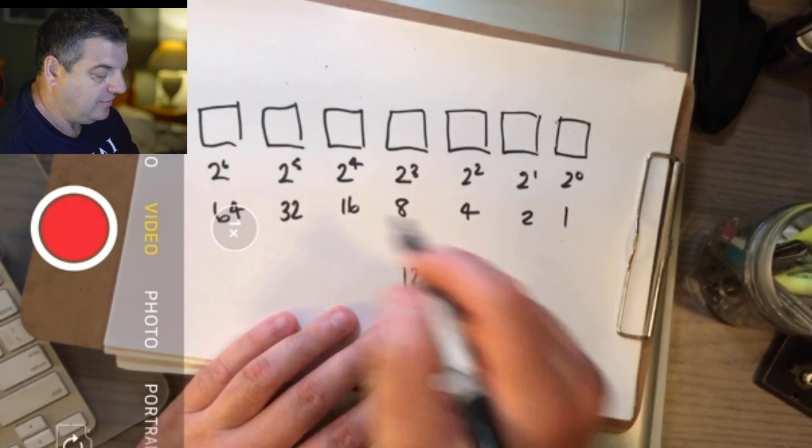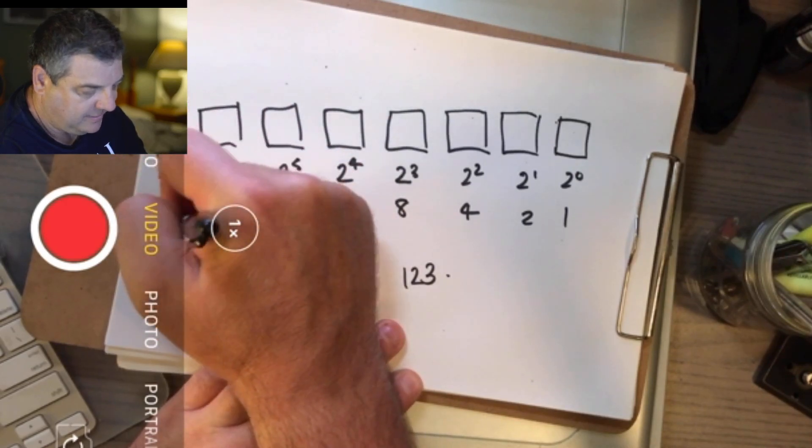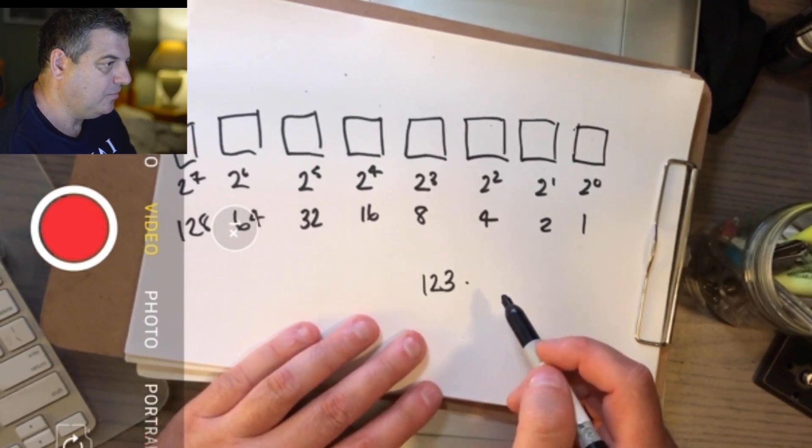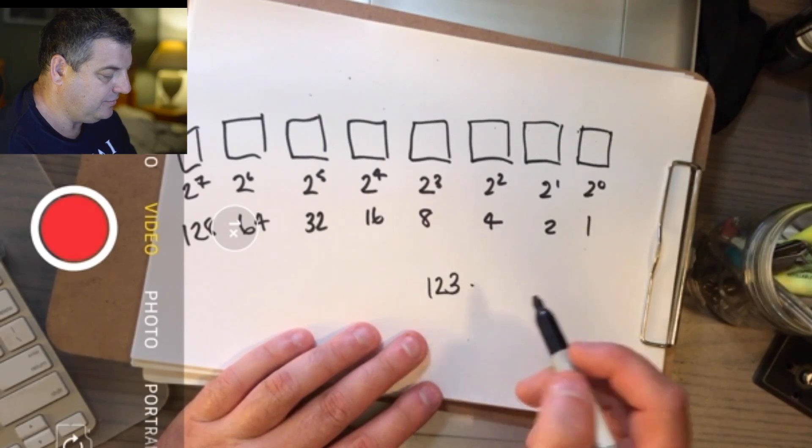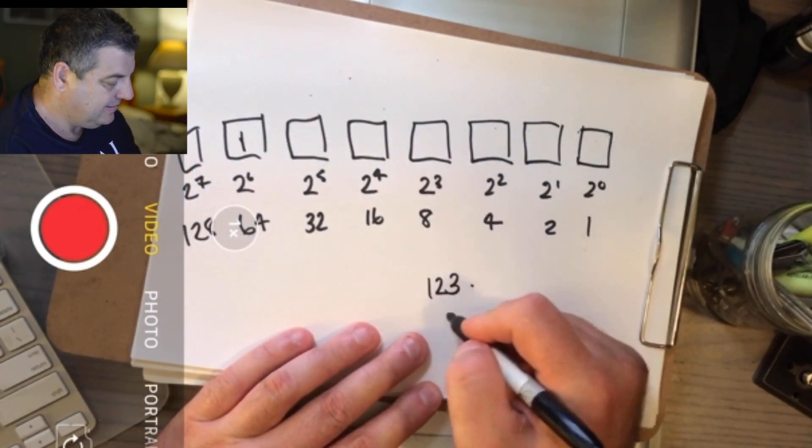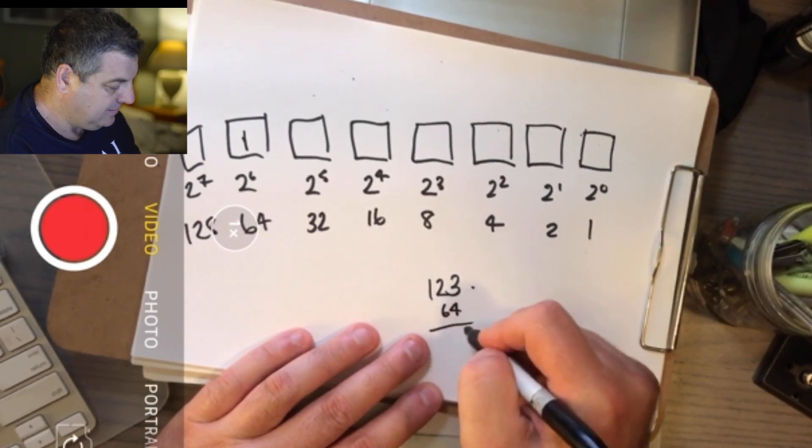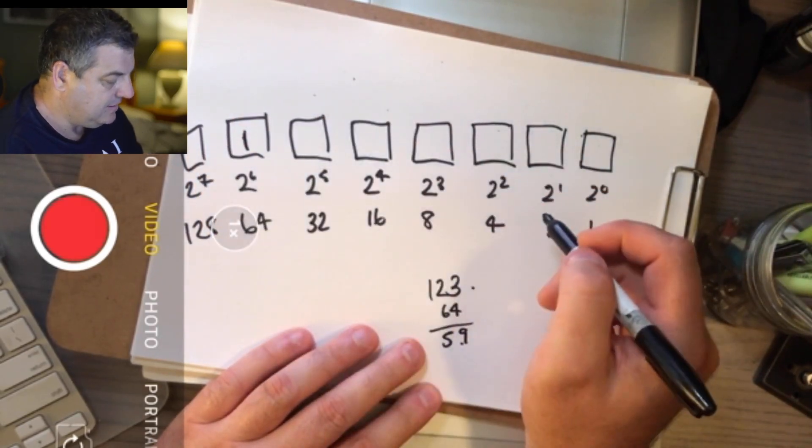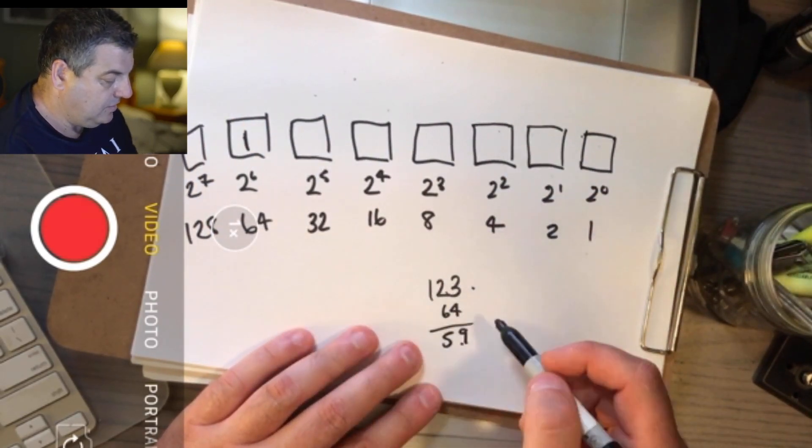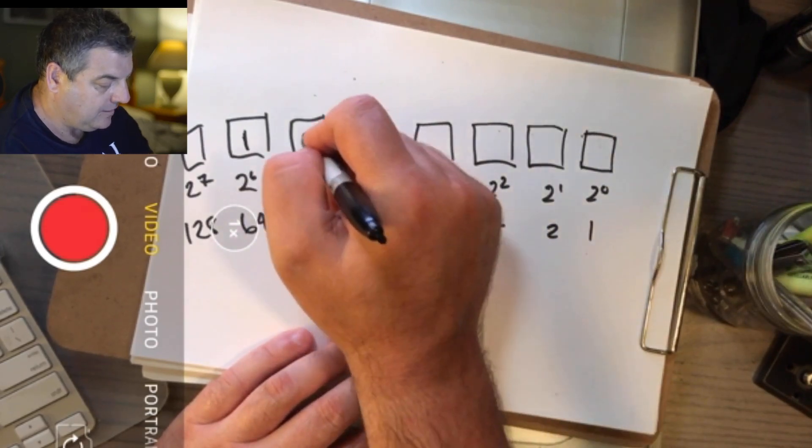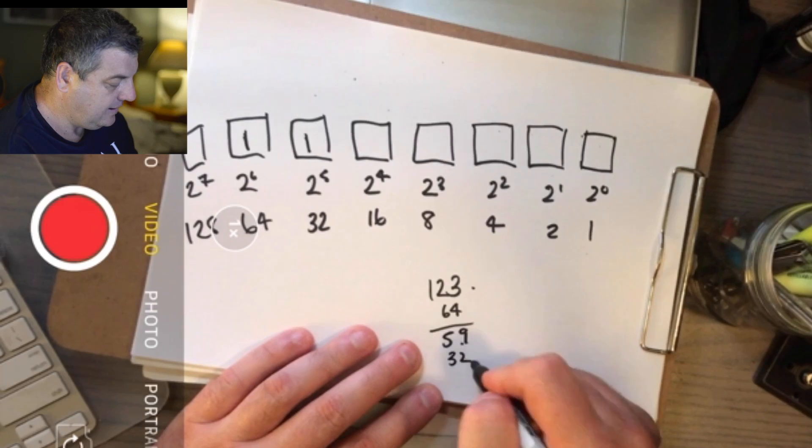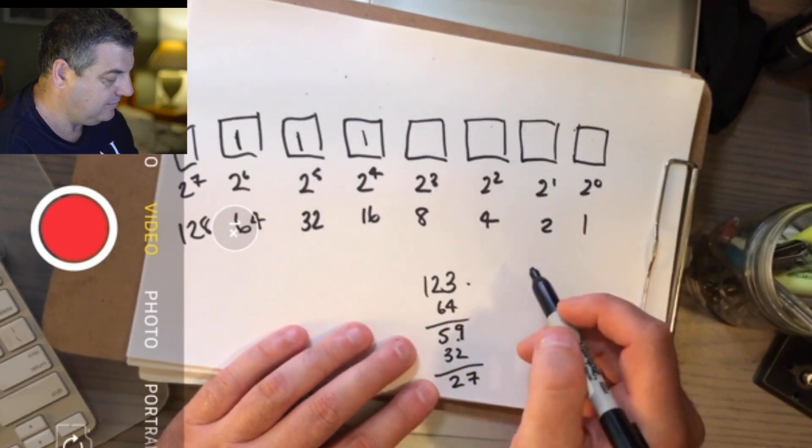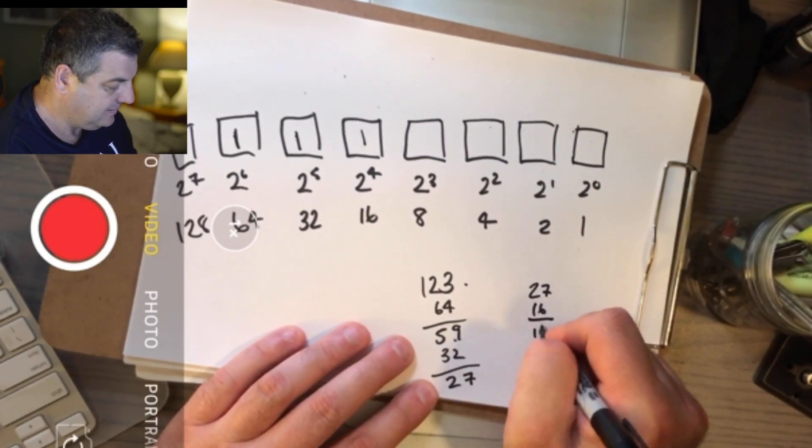So you look here, the next box would be 2 to the power of 7 which is 128. If you take 128 from 123, you'll get a negative number, so that's not going to work. So the next highest number is 64. So you put a 1 there, take 64 from here, 59. Then you've got 32. If you take 32 from there, you won't get a negative number, so put a 1 in there. Take 32 from there, 27.